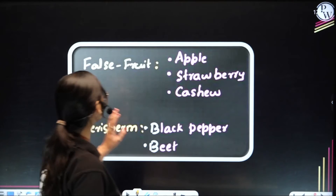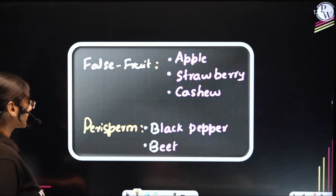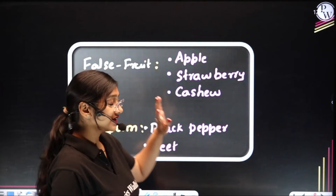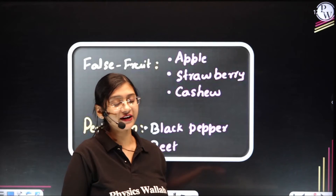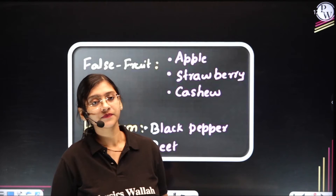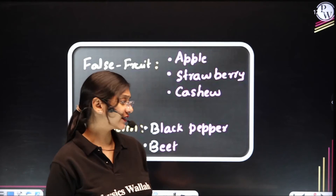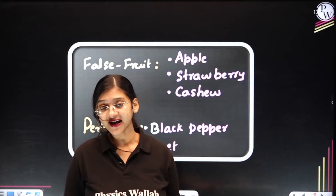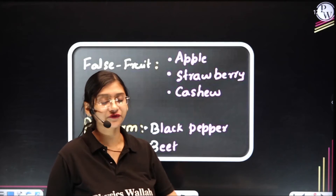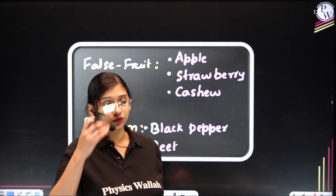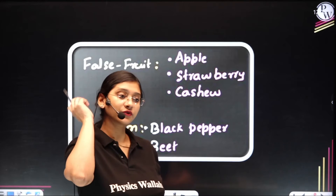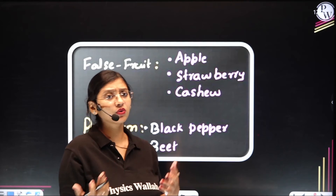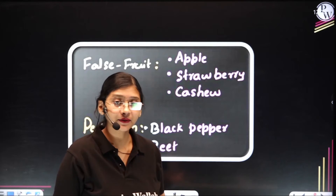Moving further — different types of fruit. We will be studying about true fruits and false fruits. True fruits are easily identified — they are the fruit produced from the ovary. So most of the fruits that we eat, for example mango, are true fruits.